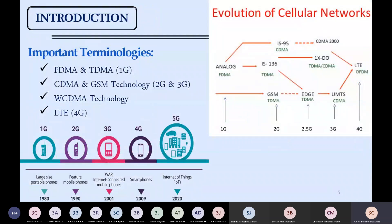Starting with the important terminologies we need to know before understanding how phone cloning works: when 1G was introduced it was an analog-based system. The technologies behind that were FDMA and TDMA — Frequency Division Multiple Access and Time Division Multiple Access. In FDMA, unlimited bandwidth was allocated for unlimited time, whereas in TDMA there was a time restriction. Based on that, after a few years of research, CDMA and GSM technology came into existence.